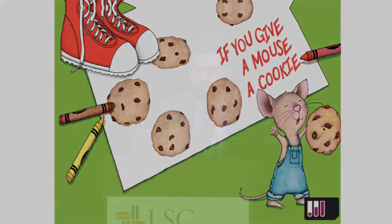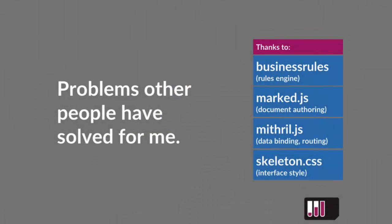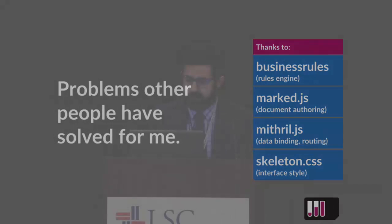Friendly itself is built mostly on off-the-shelf components — an off-the-shelf rules engine, off-the-shelf document authoring, off-the-shelf data binding, off-the-shelf styling. All we really did was wire this together in a way that librarians could use.